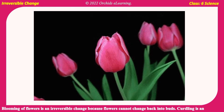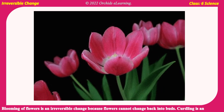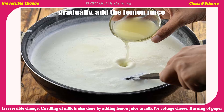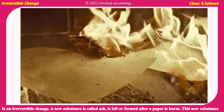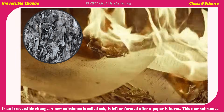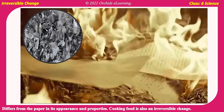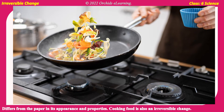Blooming of flowers is an irreversible change because flowers cannot change back into buds. Curdling is an irreversible change — curdling of milk is done by adding lemon juice to milk for cottage cheese. Burning of paper is an irreversible change. A new substance called ash is formed after a paper is burnt. This new substance differs from the paper in its appearance and properties. Cooking food is also an irreversible change.